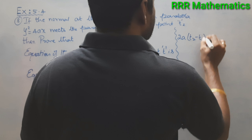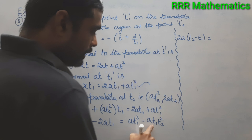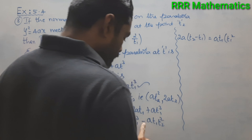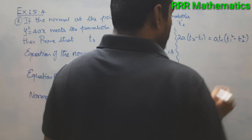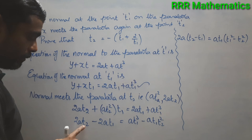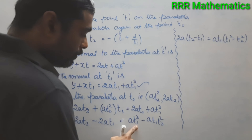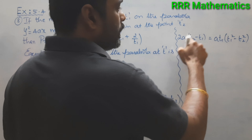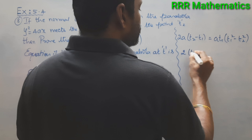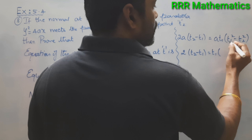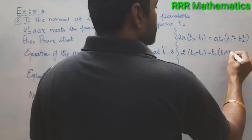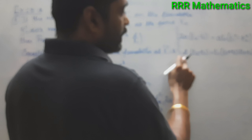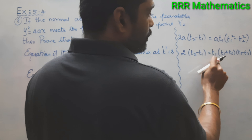Taking 'a' common on both sides, 'a' cancels. On the right side, t1² - t2² is in the form a² - b² = (a+b)(a-b), so it becomes t1(t1 + t2)(t1 - t2). Thus we have: 2(t2 - t1) = t1·(t1 + t2)·(t1 - t2).